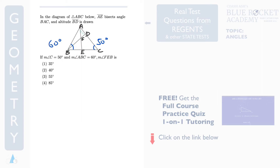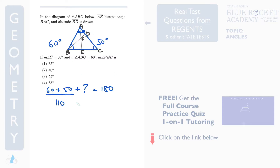As soon as you see this and look at this triangle, you can think about the sum of angles. So you have 60 plus 50 plus how much is equal to 180. 60 plus 50 is 110, so the remaining angle is 70 degrees. Therefore, this angle over here is 70 degrees.